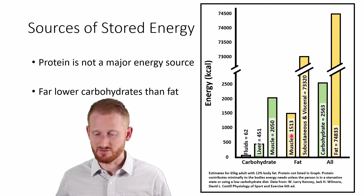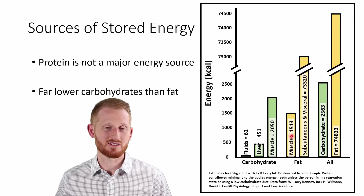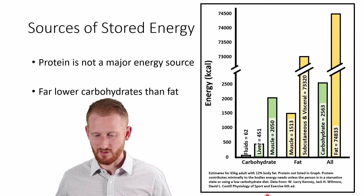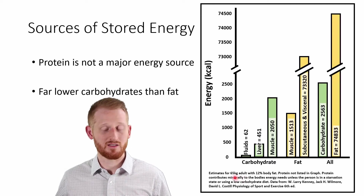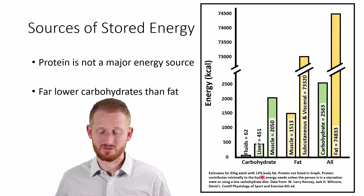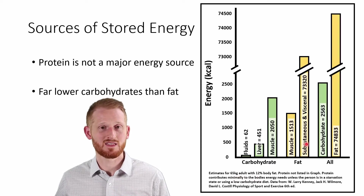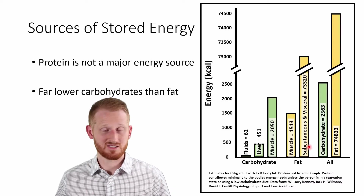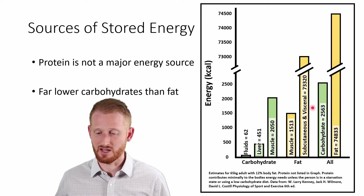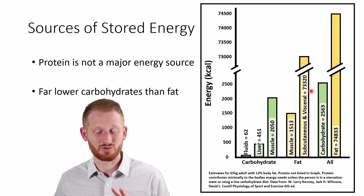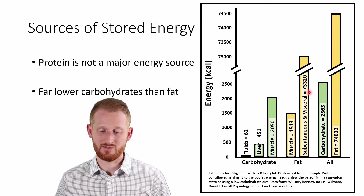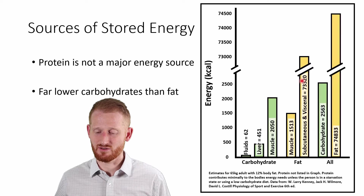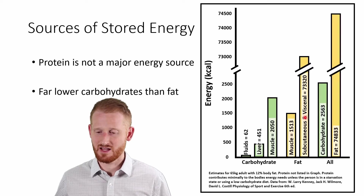Looking at fats, we have fat stored in the muscle — around 1,513 calories of fat stored in the muscles around the body. This is based on a 65-kilogram adult with about 12 percent body fat, so obviously how much fat you store is going to go up if your body fat percentage goes up. We also have subcutaneous and visceral fat stored in the body, with around 73,320 calories stored on average.